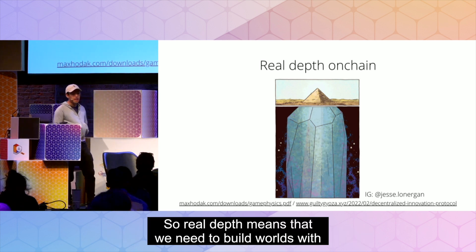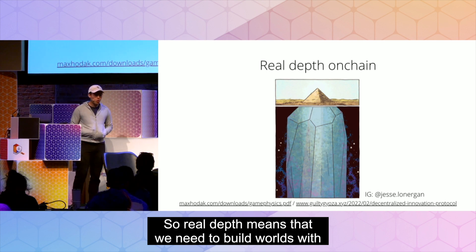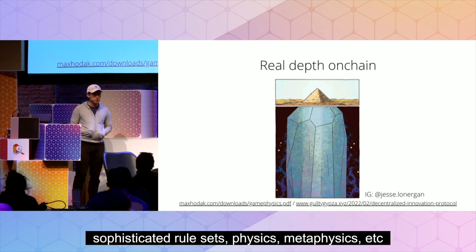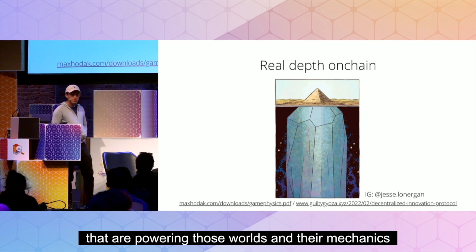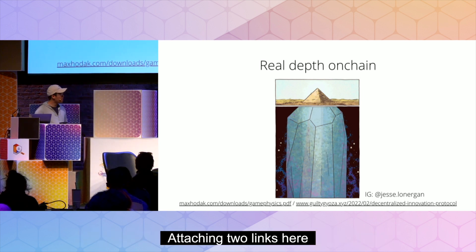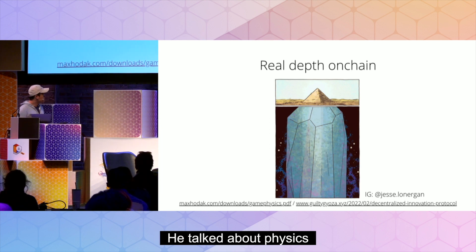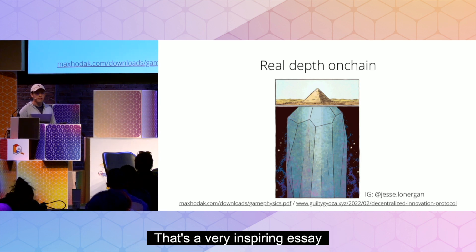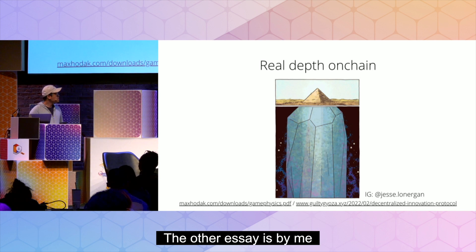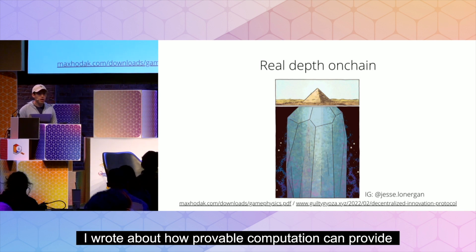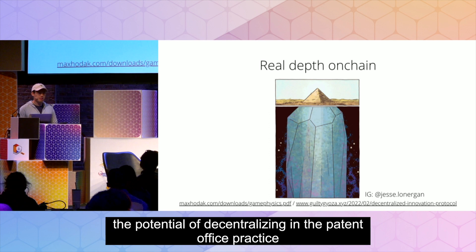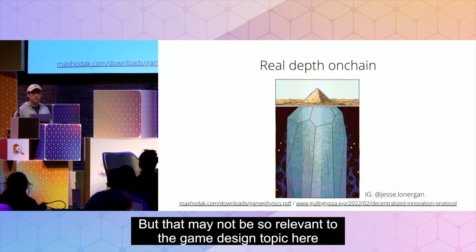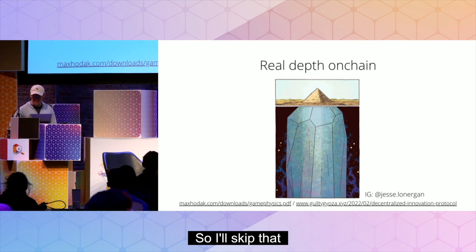So real depth means that we need to build worlds with sophisticated rule sets — physics, metaphysics, et cetera — that are powering those worlds and their mechanics. Attaching two links here: one is by Max Hodak, who talked about physics consideration and simulated realities — a very inspiring essay. The other is by me, about how provable computation can provide the potential of decentralizing the patent office practice. That may not be so relevant to game design here, so I'll skip that.